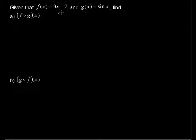Given that f of x equals 3x minus 2 and g of x equals sine of x, find f composed with g of x.